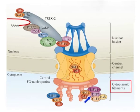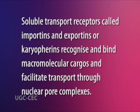The mRNPs are transported to the nuclear pore. Before translocation through the nuclear pore begins, some proteins — for example, the splicing components — dissociate from the mRNA. The proteins destined for export contain a nuclear export signal (NES), each of which targets them for transport. DBP5 interacts with the cytoplasmic fibrils of the NPC. Soluble transport receptors called importins and exportins, or karyopherins, recognize and bind macromolecular cargoes and facilitate transport through nuclear pore complexes.